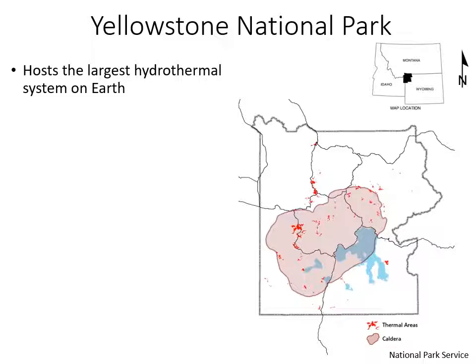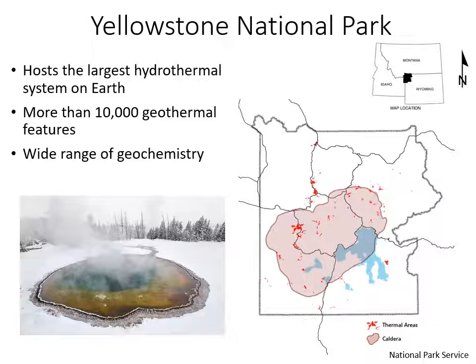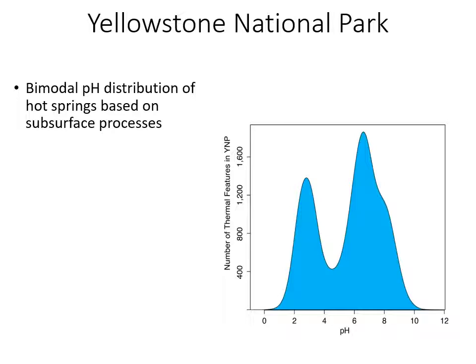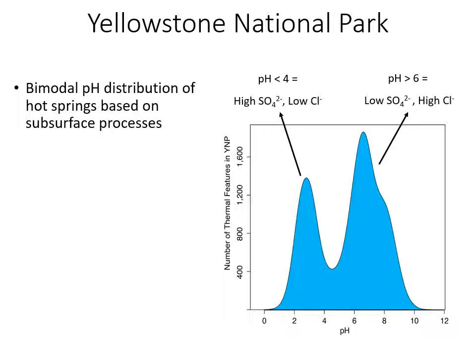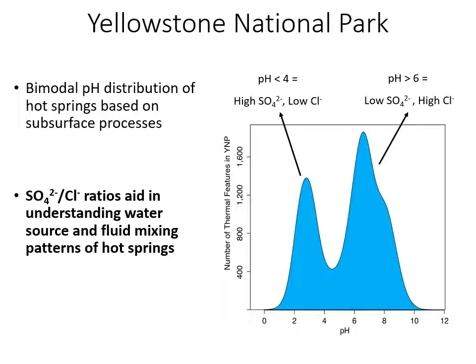Yellowstone National Park hosts the largest hydrothermal system on Earth and is also very close to us here in Montana, making it a very suitable environment for research. It has more than 10,000 hydrothermal features and a wide range of water chemistry, which allows us to understand how this environment might be promoting biodiversity. Yellowstone hot springs have a really interesting bimodal pH distribution based on subsurface processes. Acidic springs have pH less than 4 with high sulfate and low chloride ratios, and more neutral to alkaline springs have pH higher than 6 with more chloride than sulfate. We can use sulfate and chloride ratios to aid in understanding the water sourcing and fluid mixing patterns of hot springs.